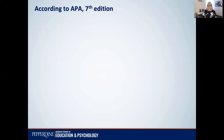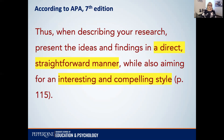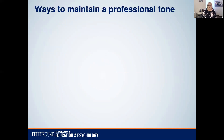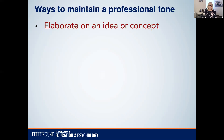Academic or scientific writing should be formal, and this is according to the 7th edition of the APA manual. When describing your research, present the ideas and findings in a direct, straightforward manner while also aiming for an interesting and compelling style. So here are some ways to do that.